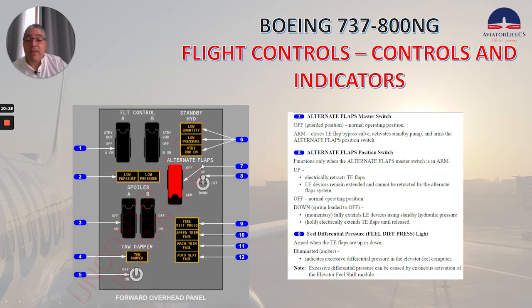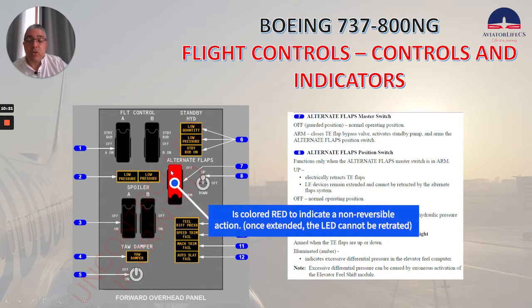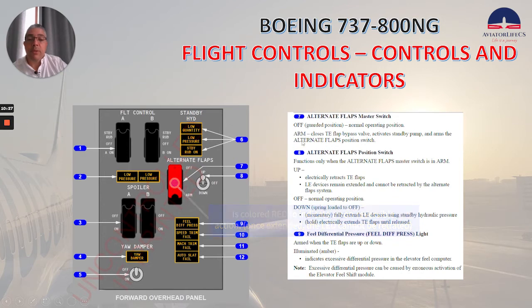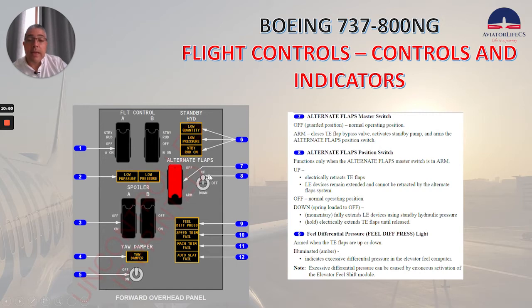The alternate flaps master switch has two positions. Off — guarded position — that's the normal operating position. Arm closes the trailing edge flap bypass valve, activates the standby pump, and arms the alternate flaps position switch. The alternate flap position switch functions only when the alternate flaps master switch is in the arm position. In off, it electrically retracts trailing edge flaps; leading edge devices remain extended and cannot be retracted by the alternate flap system.